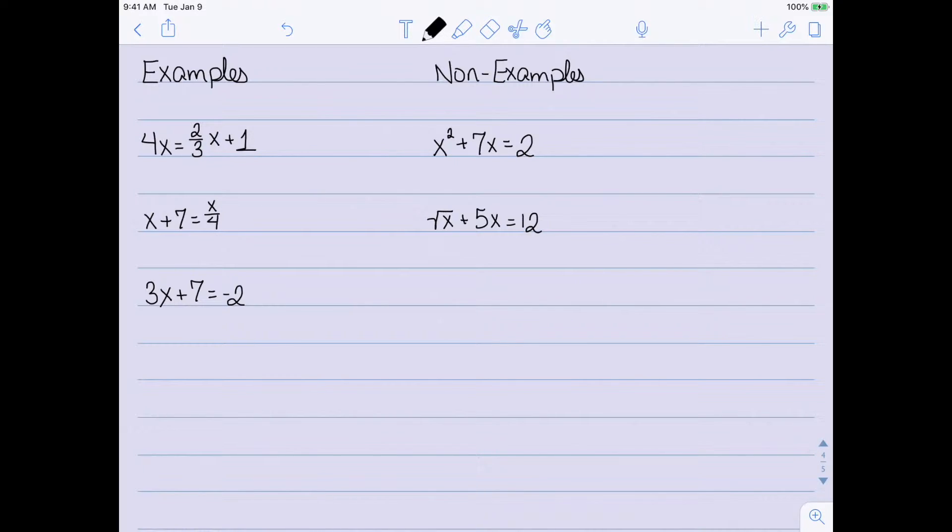We can't have a square root of x. Finally, 2 over x minus 3x equals 4. We can't have x on the bottom of a fraction. As we can see from my second linear example, you can have x on the top, but just not on the bottom.